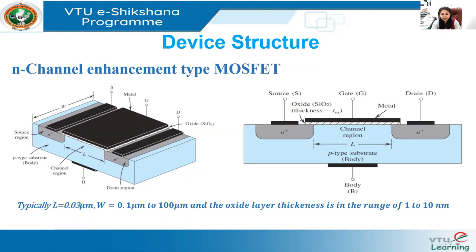Looking at the working of the N-channel enhancement MOSFET: on application of drain-to-source voltage VDS, keeping the gate-to-source voltage zero by directly connecting the gate terminal to the source terminal, practically zero current flows — quite different from a depletion type MOSFET or JFET device. If we increase the magnitude of VGS in the positive direction, the concentration of electrons near the SiO2 surface increases. At a particular value of VGS, there is a measurable current flow between drain and source. This value of VGS is called the threshold voltage.